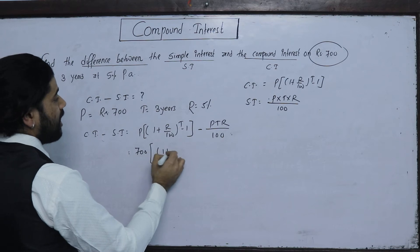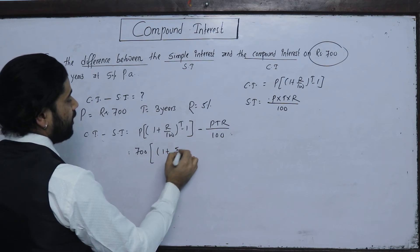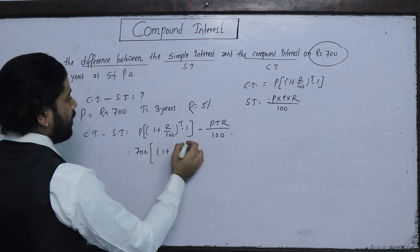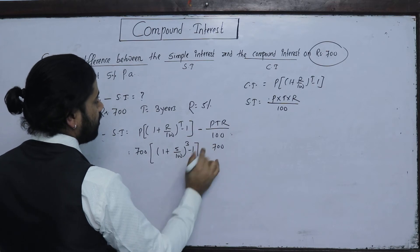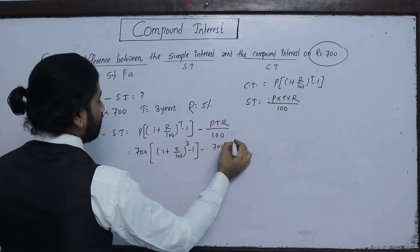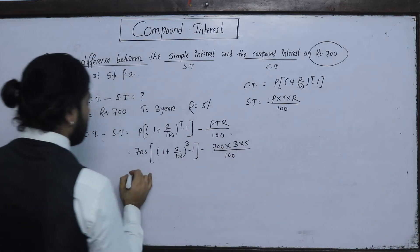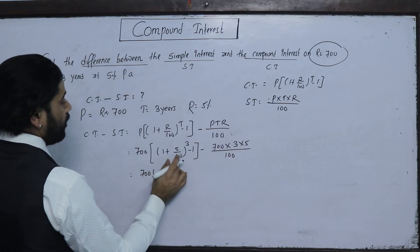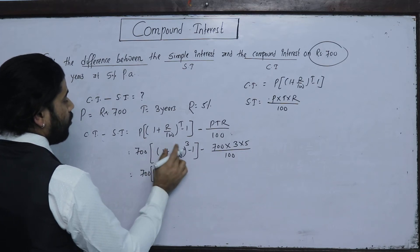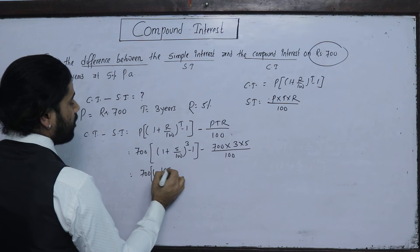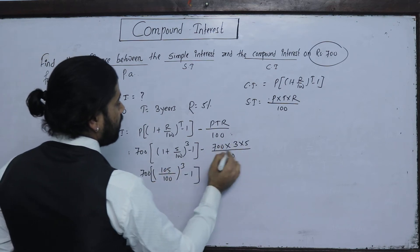Substituting R = 5% and T = 3 years: 700 = P × [(1 + 5/100)^3 − 1] − P × 3 × 5/100. This simplifies to 700 = P × [(1.05)^3 − 1] − 700 × 3 × 5/100, with the zeros cancelling appropriately.